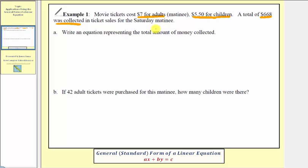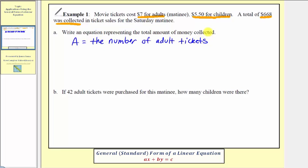So we have two unknowns. We don't know how many adult tickets were sold, and we don't know how many children's tickets were sold. So let's define our variables for these two unknowns. We could use x and y, but we'll use variables that help us remember what the variables represent. So let A be equal to the number of adult tickets, and let C be equal to the number of children's tickets.